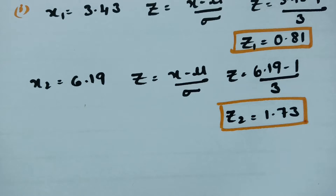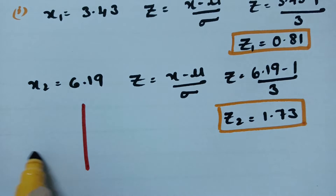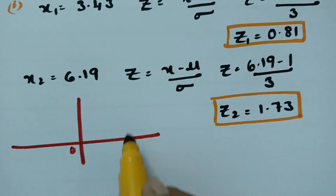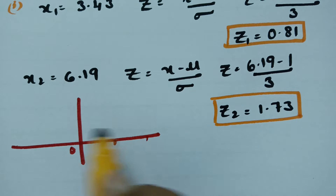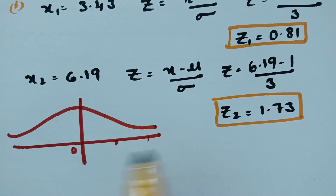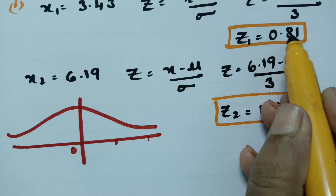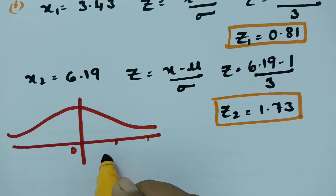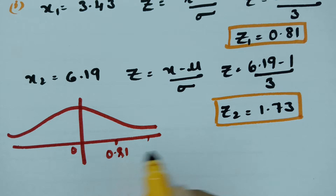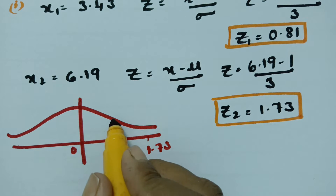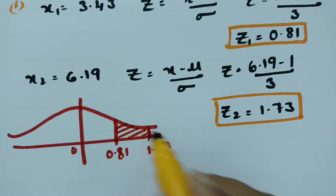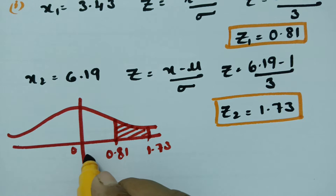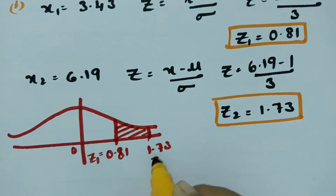We shall now plot this on the normal curve. The bell-shaped curve has 0 at center, with positive values on the right and negative values on the left. Plotting z1 = 0.81 and z2 = 1.73 on the curve, the shaded area between these two points is the required area. This z1 value and z2 value define our region.